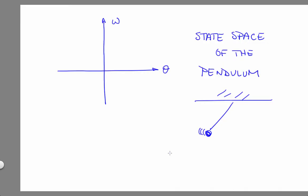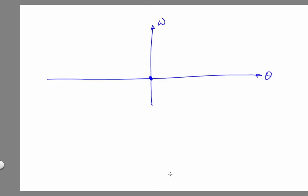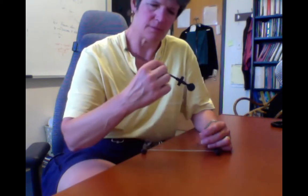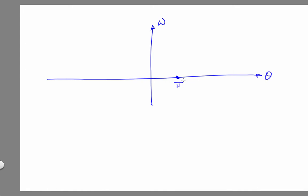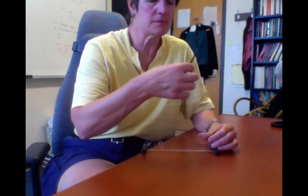As we established, the axes of the state space are theta, the angle, and omega, the angular velocity. The state space of the double pendulum would have four axes — that gets hard to draw. So this state of the system is (0, 0) on those axes. This state of the system is (pi, 0) on those axes, if I define angle positively in this direction. And this state of the system would be (negative pi, 0) on those axes.